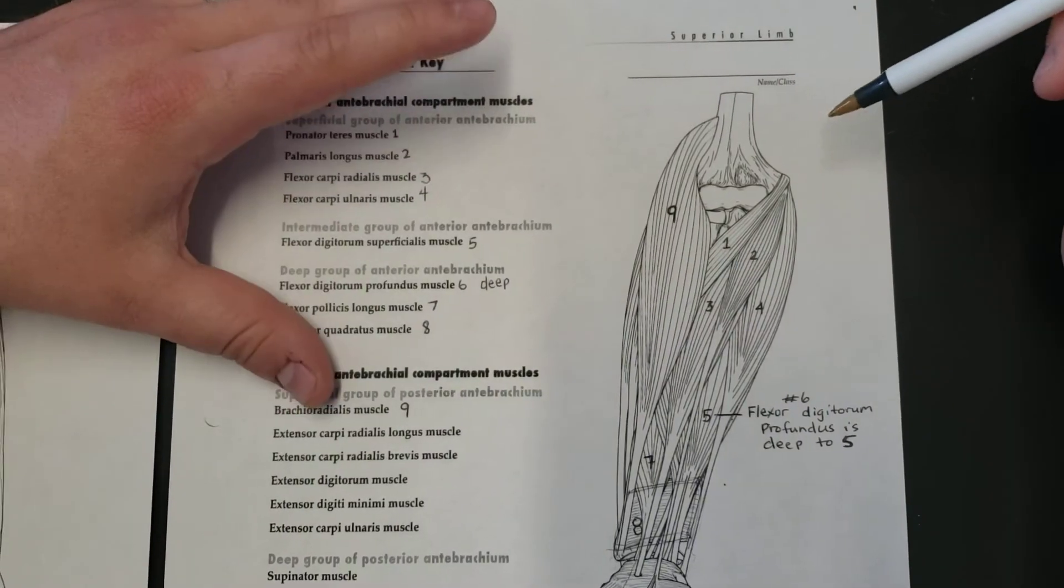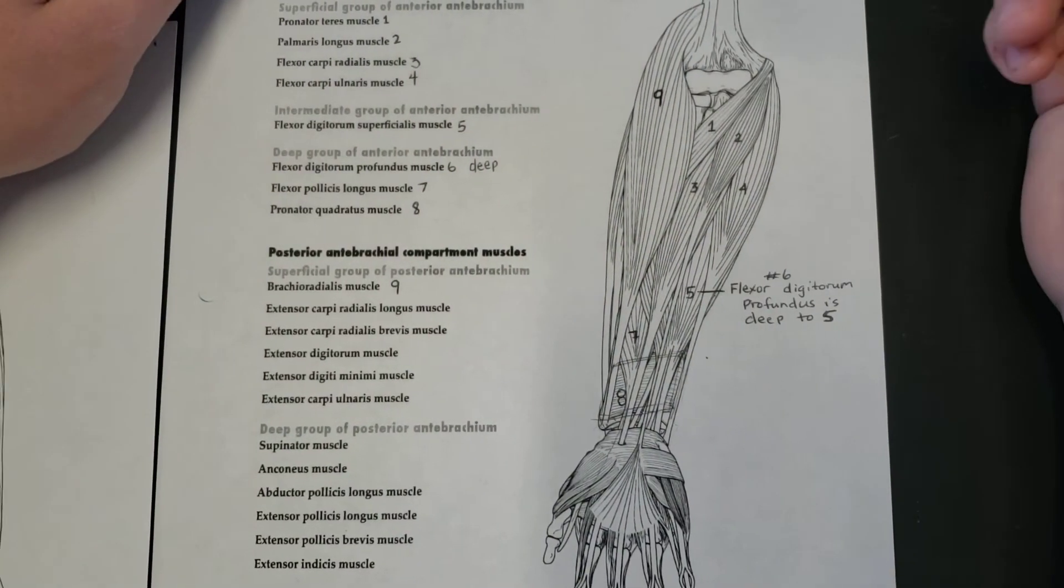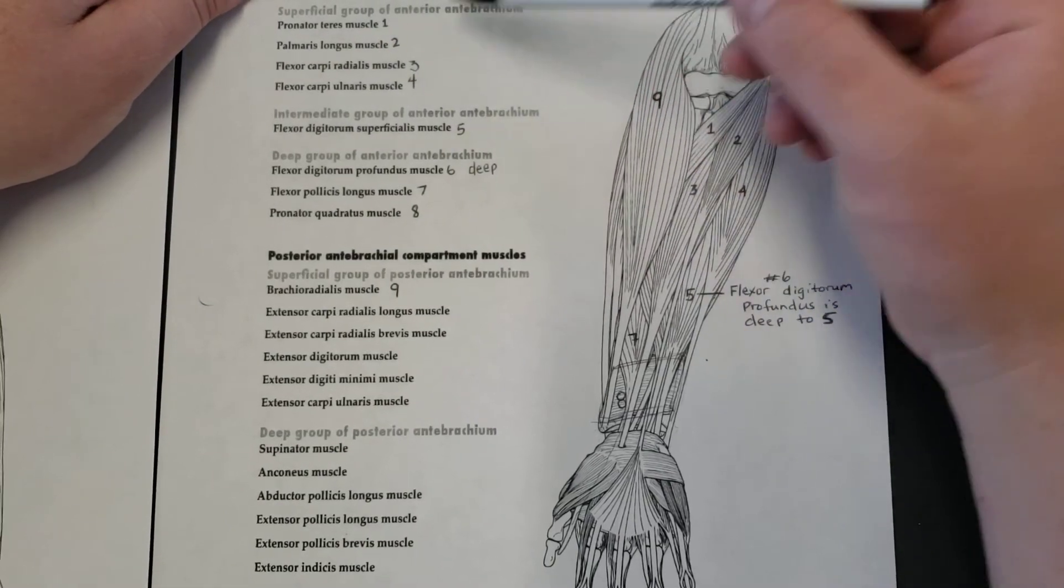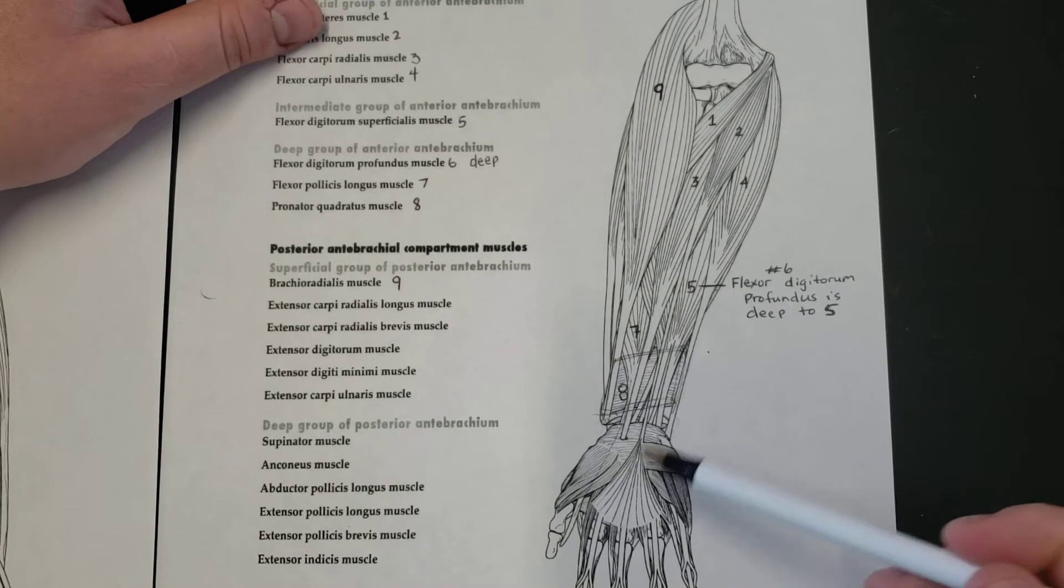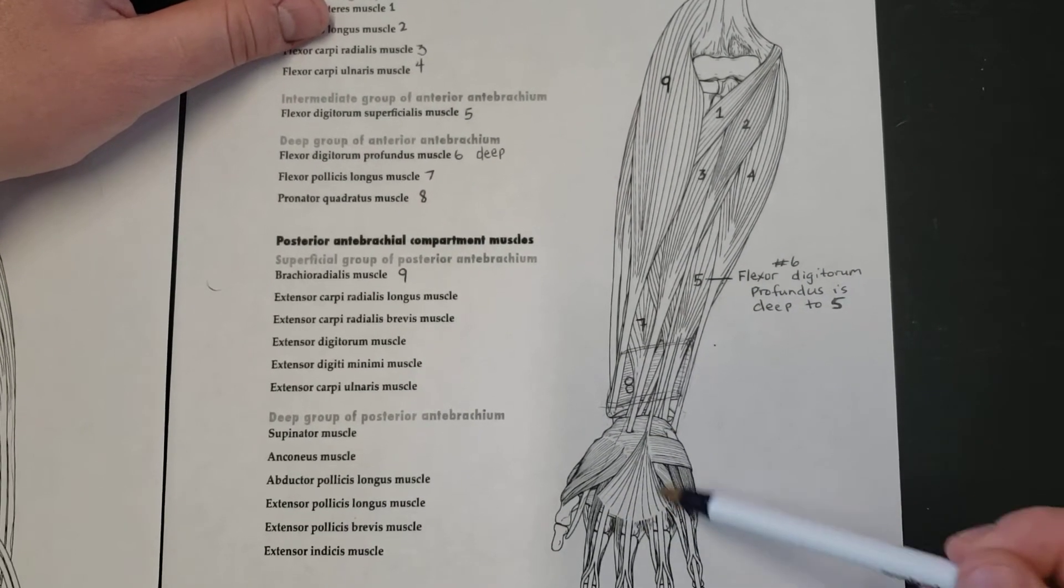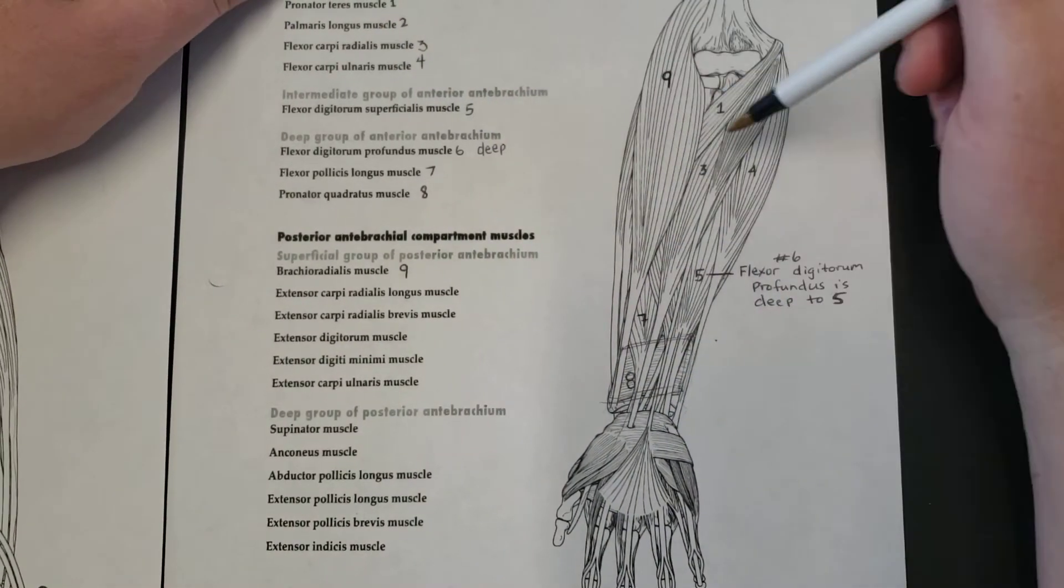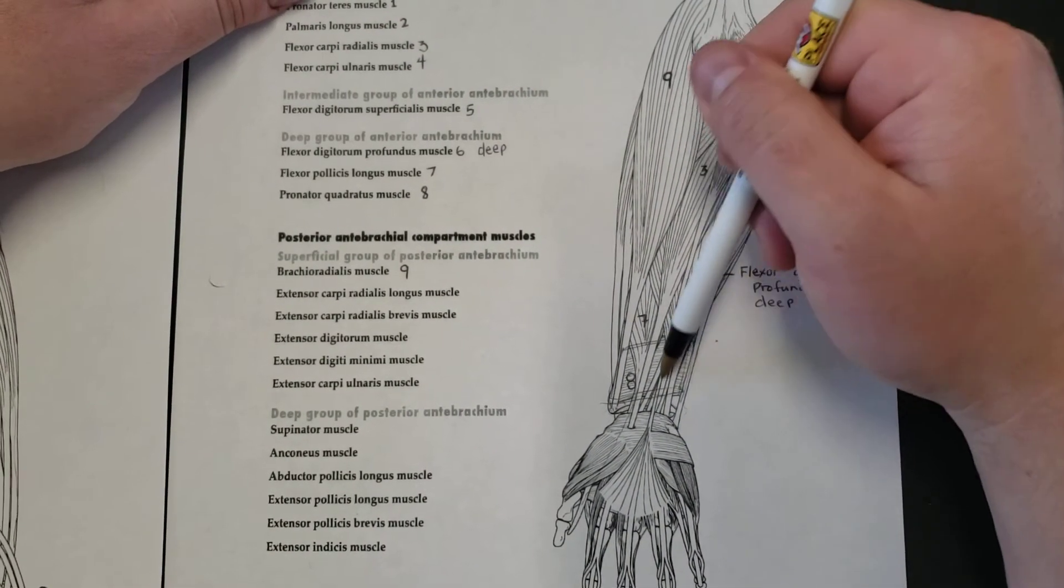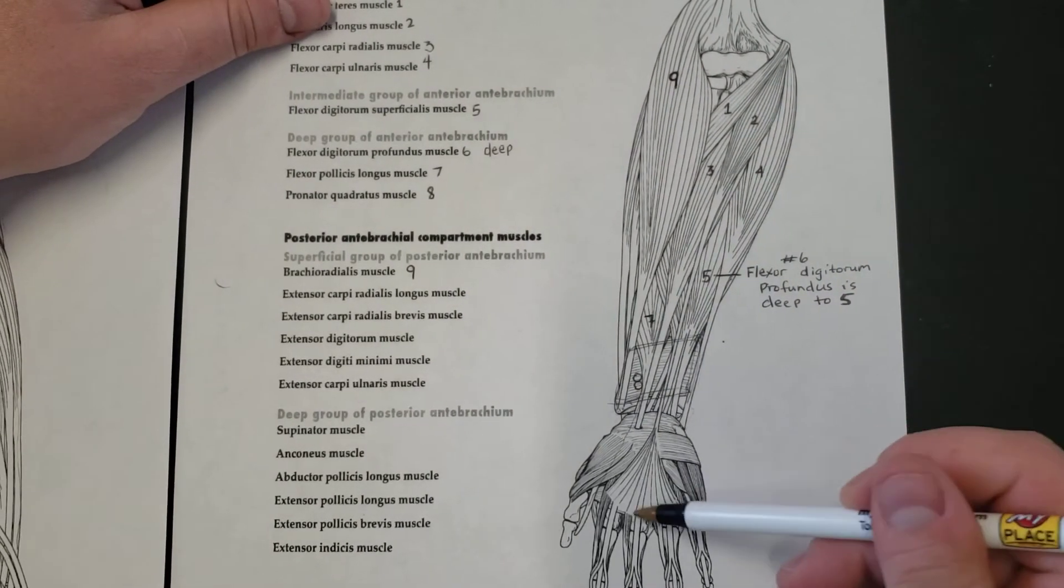Number two, palmaris longus muscle. Number two here falls down. This is like a broad tendon or what we would call like an aponeurosis. Palmaris longus—longus just means long, it's a long muscle, and palmaris meaning the palm.